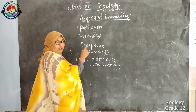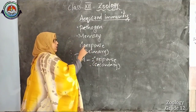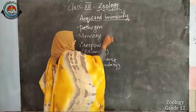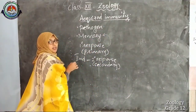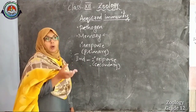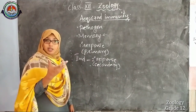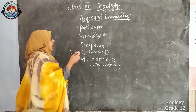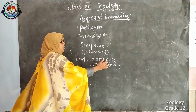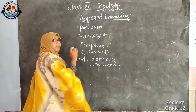For the first encounter when a pathogen enters our body, a primary response is elicited and that is coded by memory cells — which type of pathogen entered, which defensive mechanism was used — all these are coded in the memory cells. That is why the secondary response is fast and of high intensity, due to this memory.